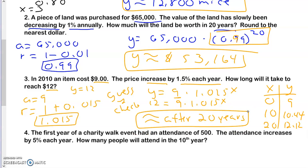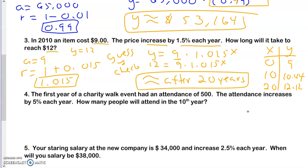The first year of a charity walk event had an attendance of 500. The attendance increased 5% each year. How many people will attend in the 10th year?